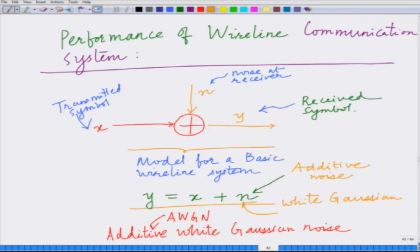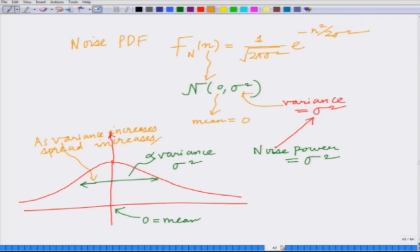As we have seen in the previous module, we are looking at the performance analysis for a basic wire line communication system, which can be modeled as an additive white Gaussian noise channel: y equals x plus n, where x is the transmitted symbol, y is the received symbol, and the noise n is additive white Gaussian with PDF f(n) = 1 over square root of 2π σ² times e to the minus n² over 2σ², where σ² is the variance or noise power and the noise has zero mean.